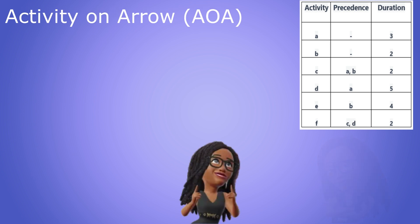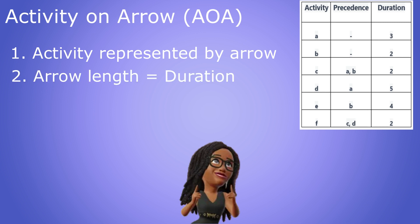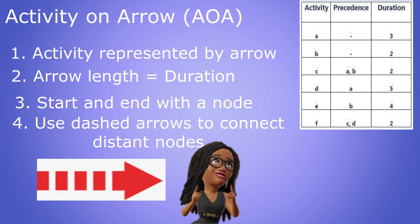When drawing our activity on arrow network diagram there are four main things to consider. One each activity is represented by an arrow. Two the length of the arrow can be used to represent the duration. Three each activity starts and ends with a node. Four we used dashed arrows to connect points that are logically connected but not spatially connected. You'll see what that means when we draw our network.